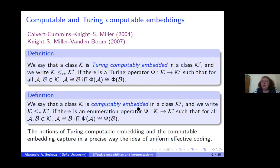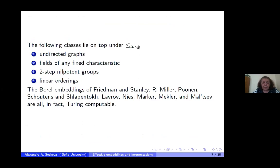There is a group working on computable embeddings, started by Iskander Kalimulin and continued by Christo Ganchev, Stefan Vatev, and Nikolai Boženov. On the top of Turing computable embeddings are exactly the same classes: undirected graphs, fields of any fixed characteristic, two-step nilpotent groups, and linear orderings — because all of these Borel embeddings are actually Turing computable.